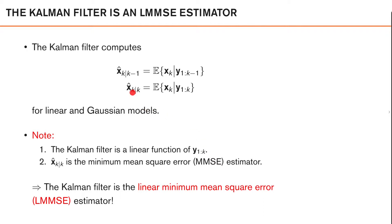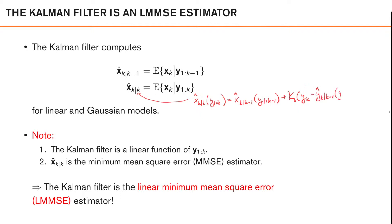For example, we can write our estimate x-hat k given k as a linear function of data. We can see that this is a linear function of data, and as these only depend on the estimate at the previous time instance — which is also a linear function of data up to time k minus 1 — this whole thing is a linear function of data.